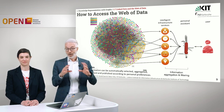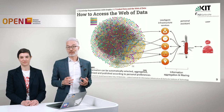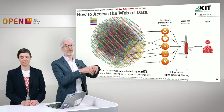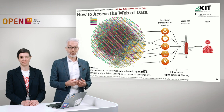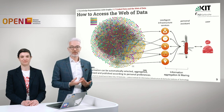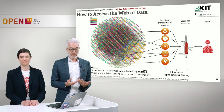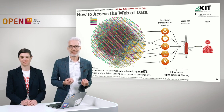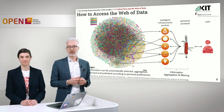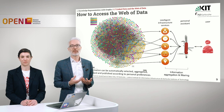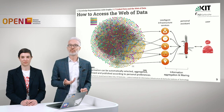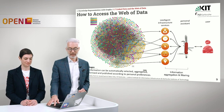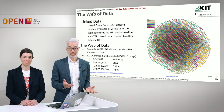These intelligent infrastructure services make use of the vast collection of data out there on the web. The advantage is clear: information can be automatically selected, aggregated, remixed, and published according to your personal preferences. This is the way how exactly the web, in the end, works.